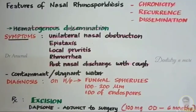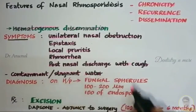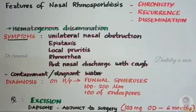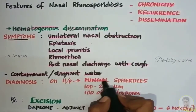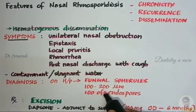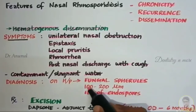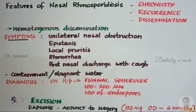The mode of infection is believed to be from contaminated or stagnant water. On histopathological examination we can see fungal spherules, that is sporangia, which form hundreds of endospores and are usually 100 to 200 micrometers in diameter.